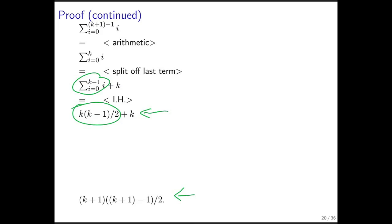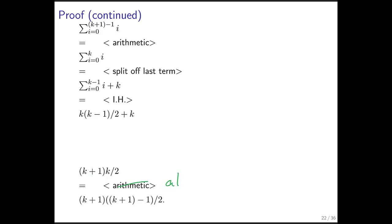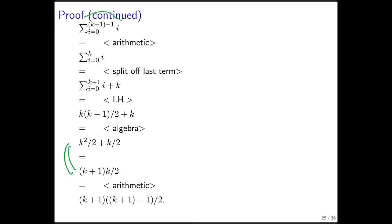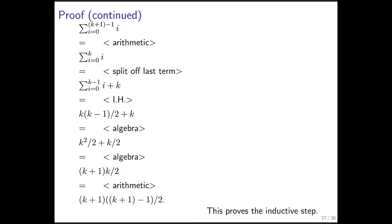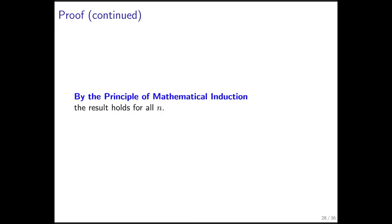Now I'm left with having to prove that this is equal to that, which should be just basic algebra. I start working backwards: I take this expression and simplify it, then show each step is equal to the next by algebra. Finally, I can recognize the last expression equals the target, and by transitivity of equality, the left-hand side equals the right-hand side. That proves the inductive step. All I need to do is say: by the principle of mathematical induction, the result holds for all n — and I'm done.